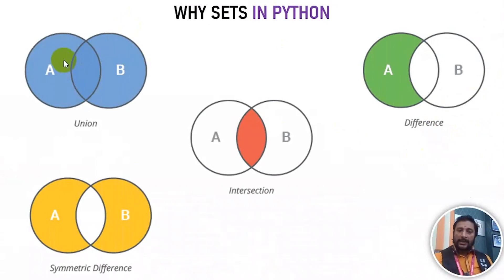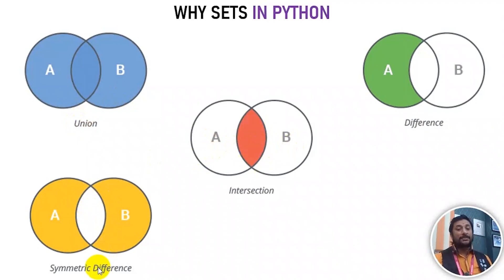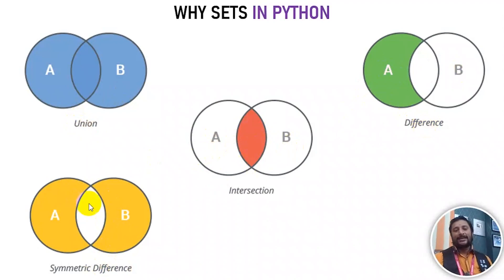If you have set A and set B data, you can use the union. If you have common data between A and B, you can use intersection — that gives you the two common data items. If there is no common data, you can use symmetric difference. That means the difference between the two sets.